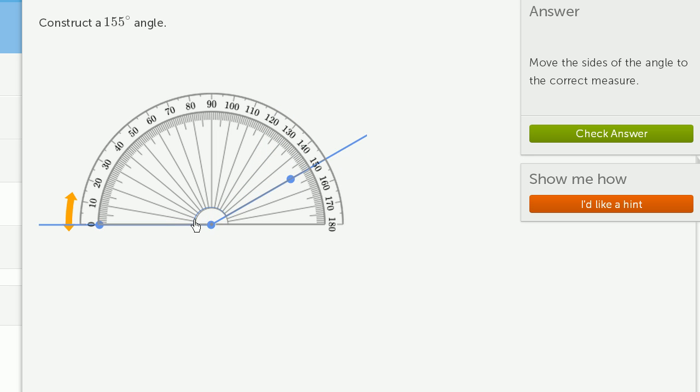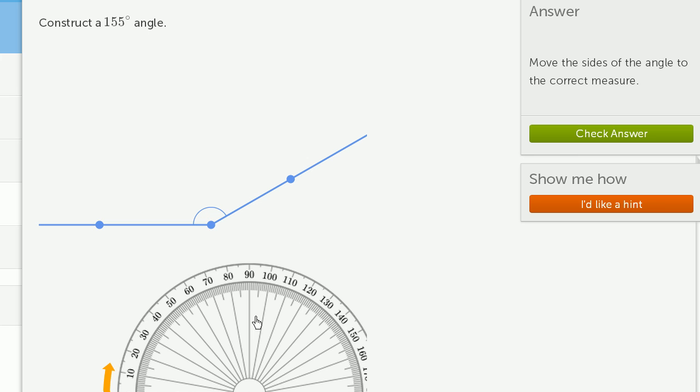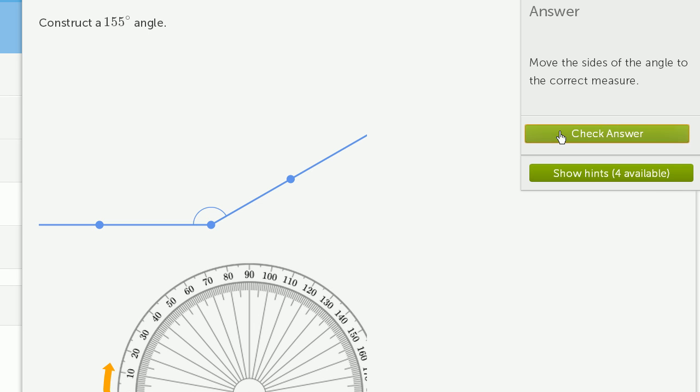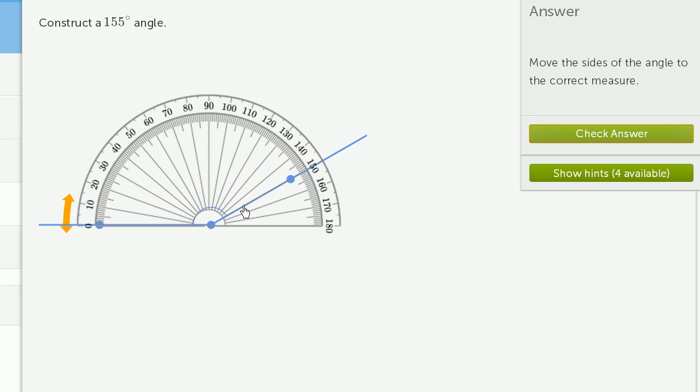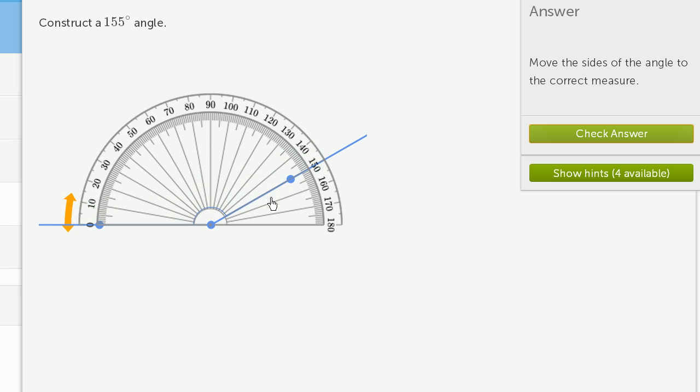And just to make sure that blue arc is measuring this angle right over here, not the outer one. And let me move the protractor out of the way so we can get a good look at it. And we got it wrong. So let's see what we, oh, 155-degree angle, not a 150-degree angle. Let me fix that. 155-degree angle. Now we got it right.